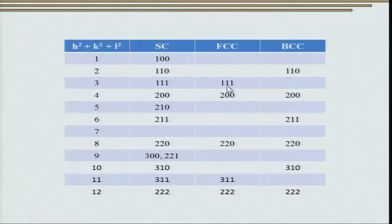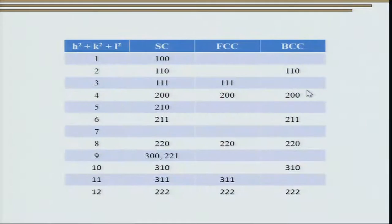When we go to the face-centered cubic structure, the diffractogram is not as heavily populated. Importantly, we notice two peaks close together with the third peak far off. This is due to the diffraction condition for FCC, where reflections occur at h²+k²+l² values of 3, 4, 8, 11, 12, and 16. For BCC, the condition gives values of 2, 4, 6, 8, 10, which means peaks are equidistant in the diffractogram.